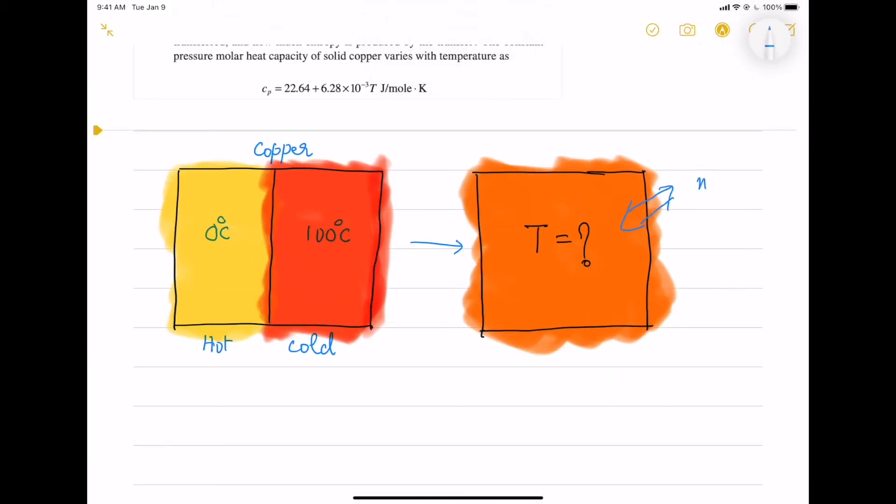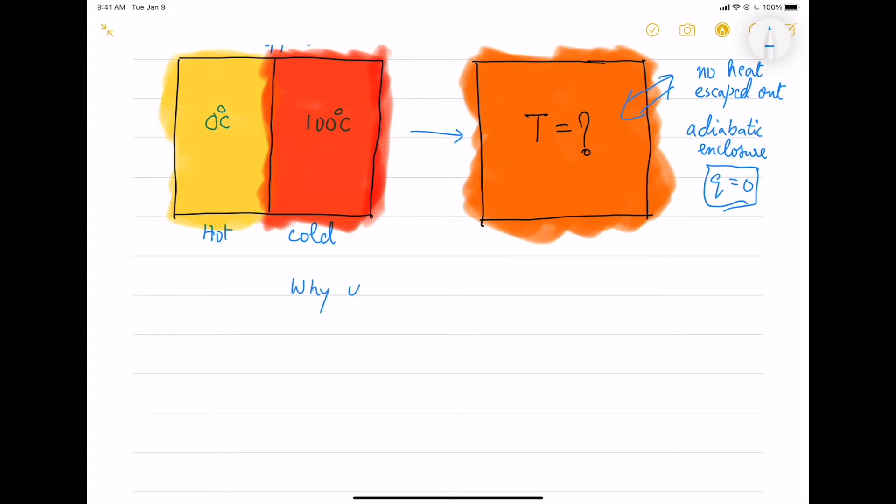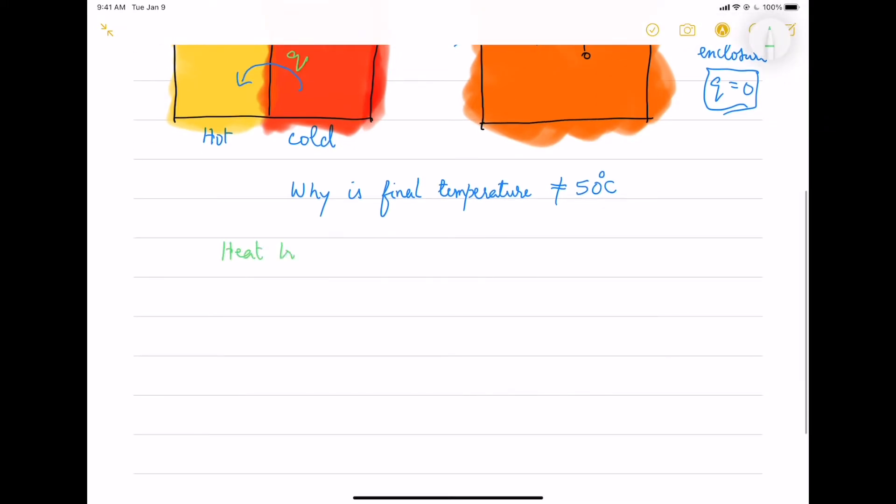In this adiabatic transfer, there is no heat escaped out, so Q equals to 0. We will use this information and also they asked why the final temperature is not the average of 0 and 100 which is 50. We will find out why.